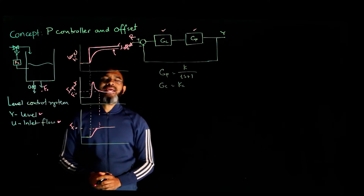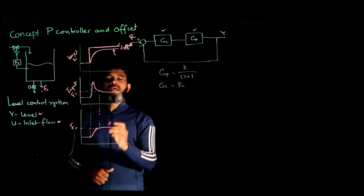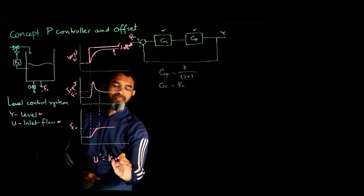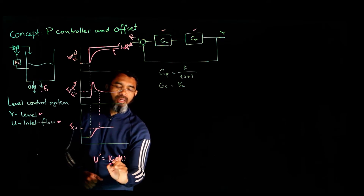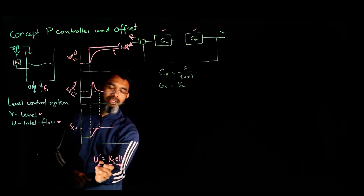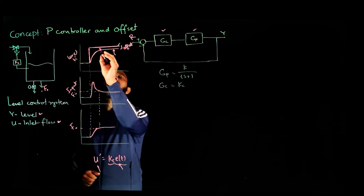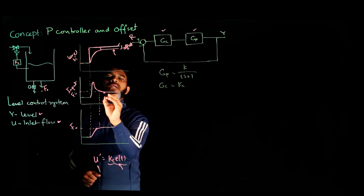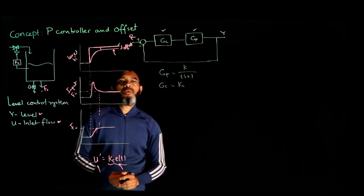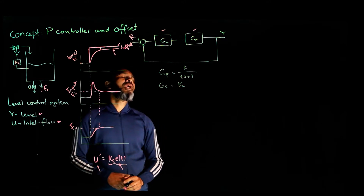The objective of the controller is to make the error zero. However, for proportional control, the control action equals Kc times the error. When the error becomes constant at some nonzero value, the control action does not change any further. So the proportional controller really cannot make the error zero.